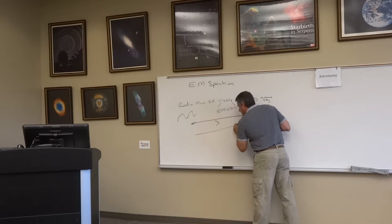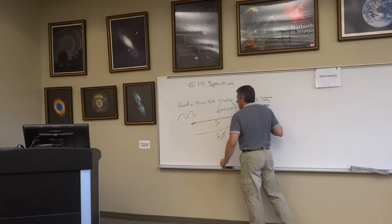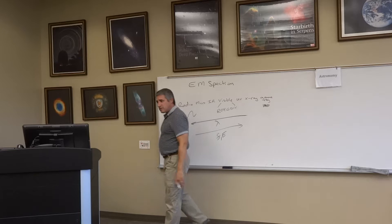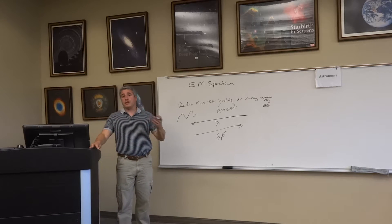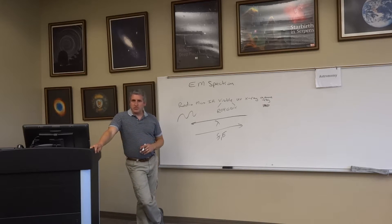We also know that frequency and energy increase in the opposite direction. So now that we got a sense for what the different types of light are, of what use is this to astronomers?